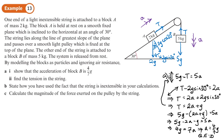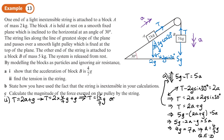Second part of part a: find the tension. Substituting a = 4g/7 into T = 2a + g: T = 2 × (4g/7) + g = 8g/7 + g = 15g/7. Converting to a decimal: 15/7 × 9.8 = 21 N exactly. So T = 21 N, or 15g/7 N.